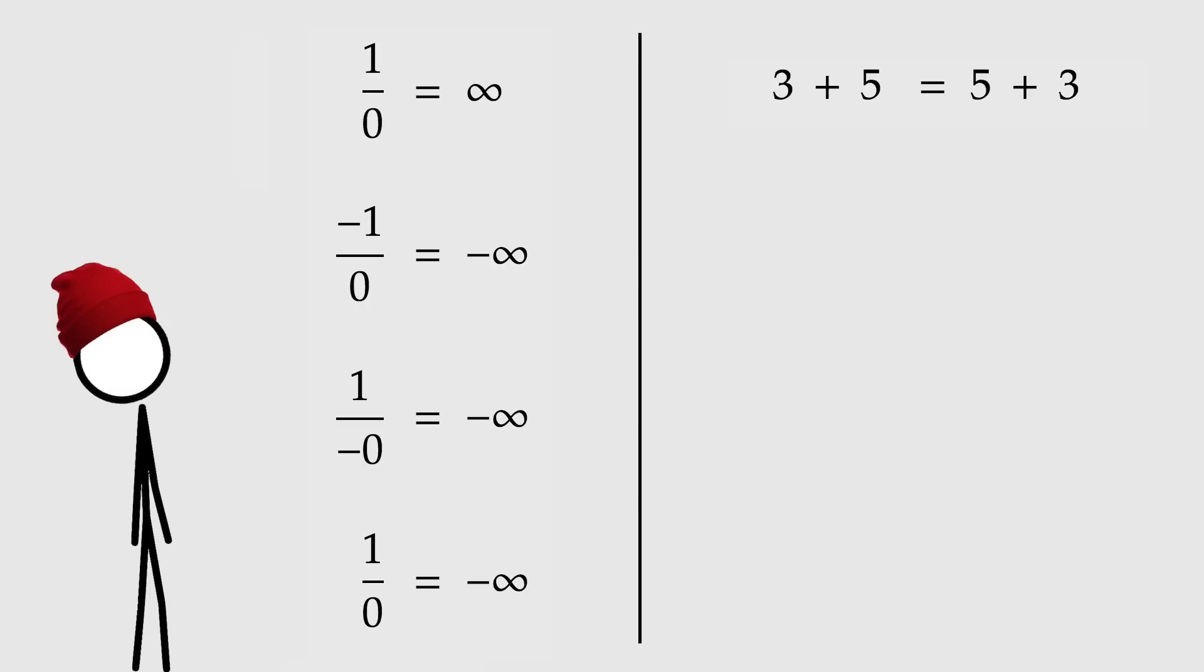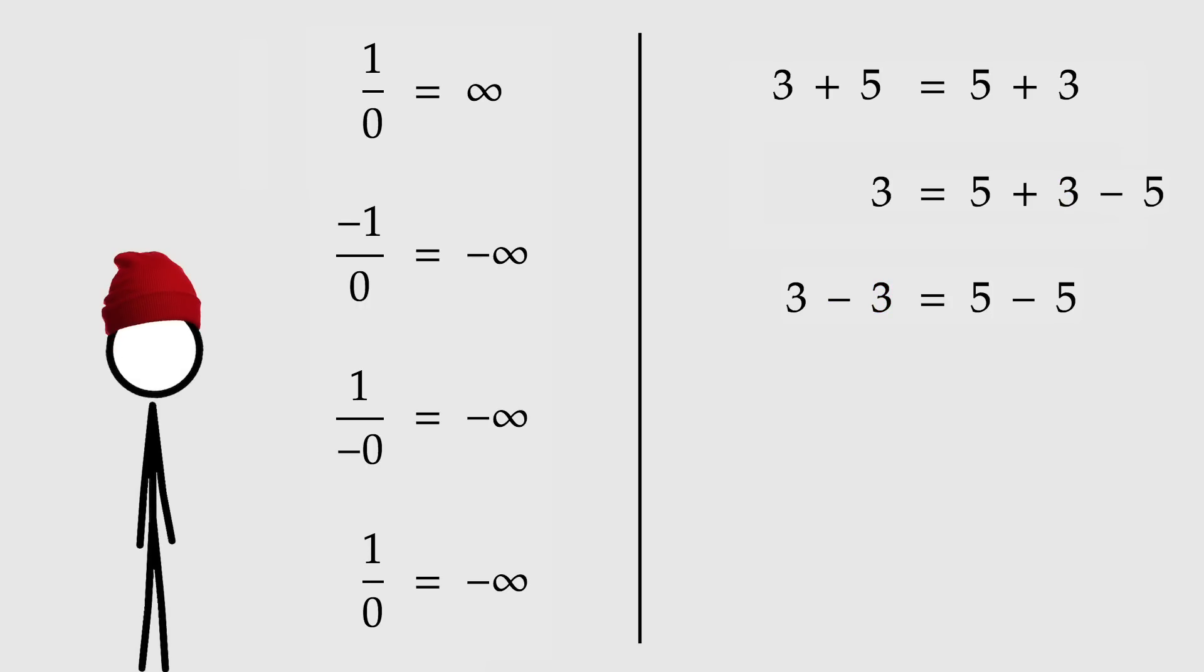We'll come back to that. But let me show you another issue with zero. Consider this extremely complicated equation. Now I'm going to take this five and move it over to the right-hand side. And I'm going to take this three and move it over to the left. Next, I will take out a factor of three and five from each side respectively. And now both sides have a common factor of one minus one. So cancel that away. Three equals five.